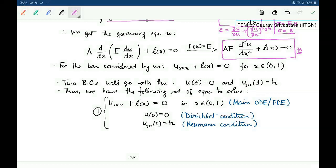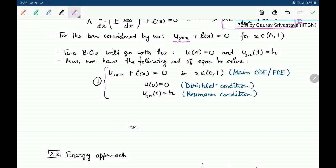Now, we will use a notation of this kind where u,x,x means the second derivative of u with respect to x. Now, to complete the description of the system that we have, we need two boundary conditions. One is that at the left end, there is no displacement where it is fixed. So u at 0 should be 0.